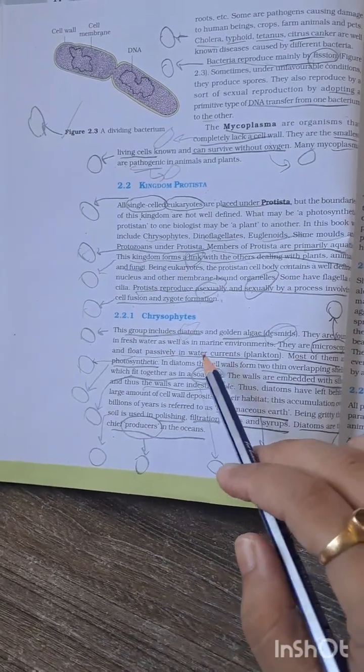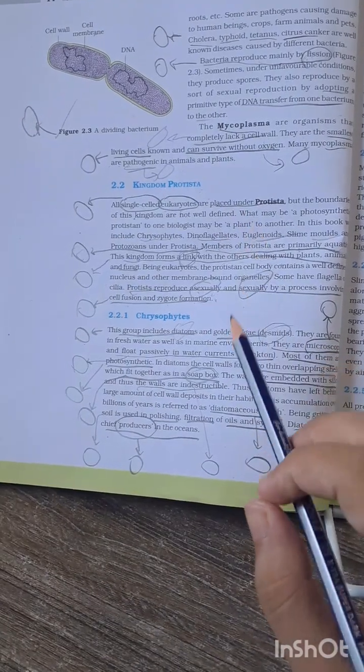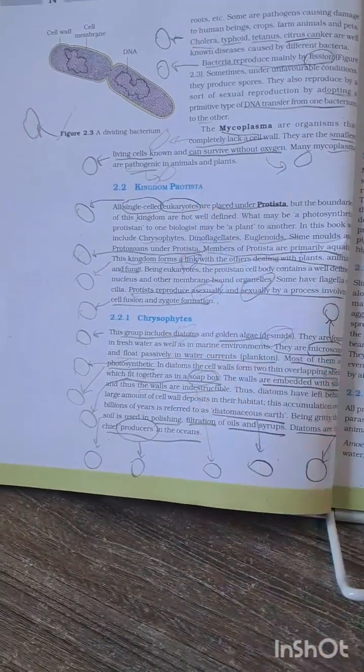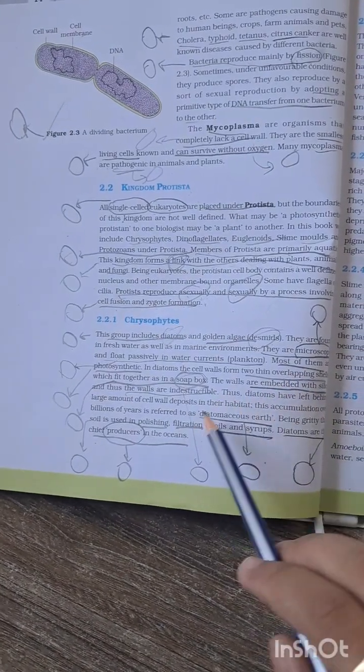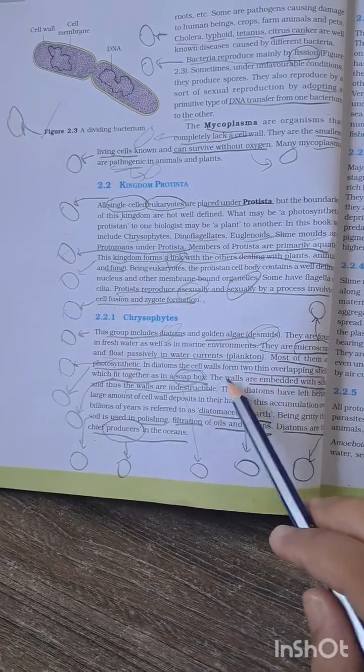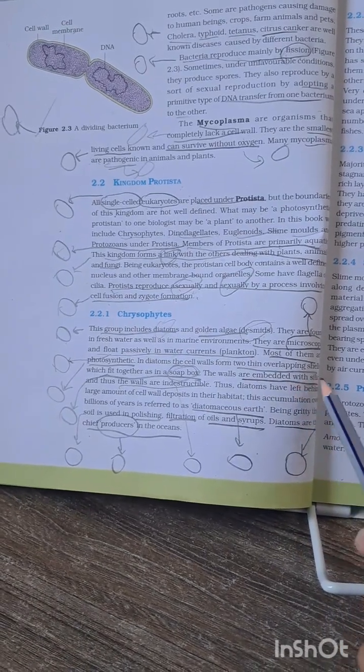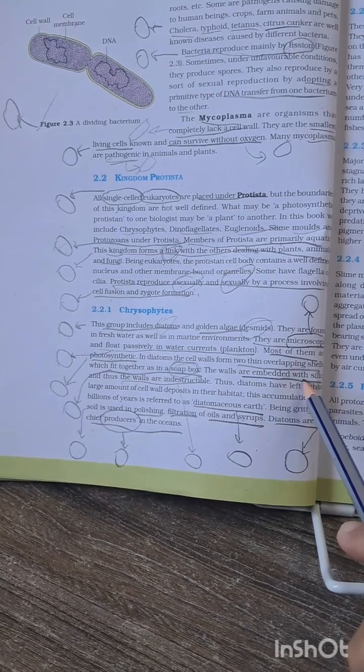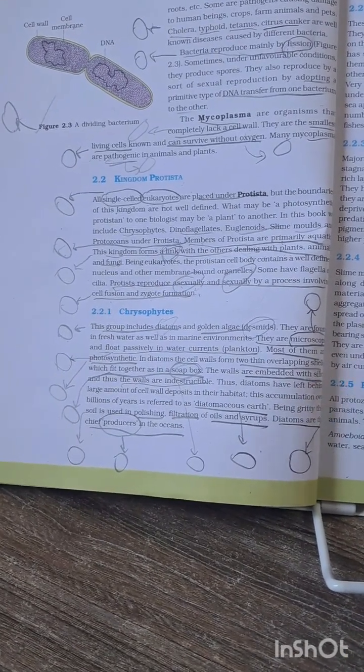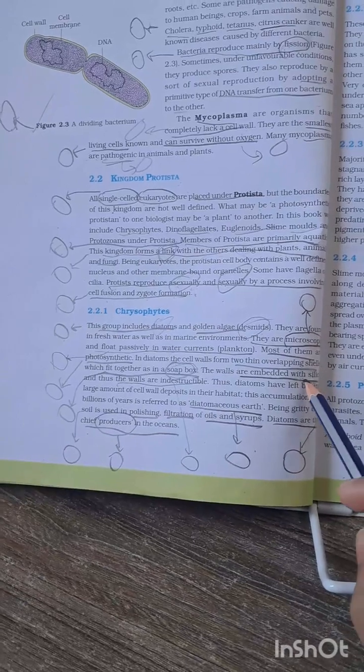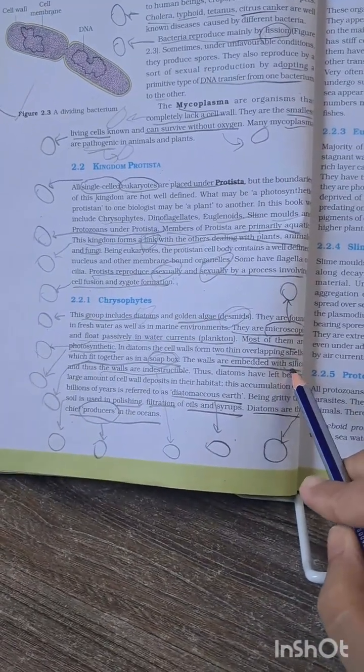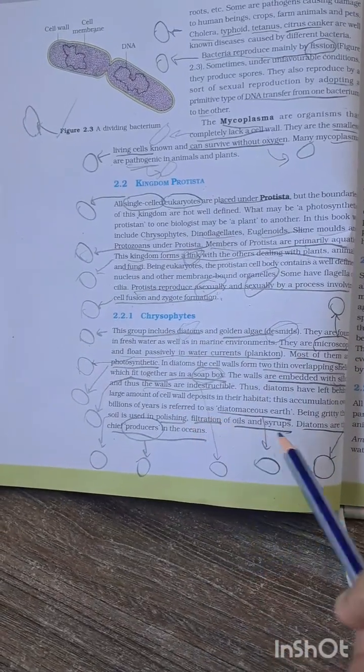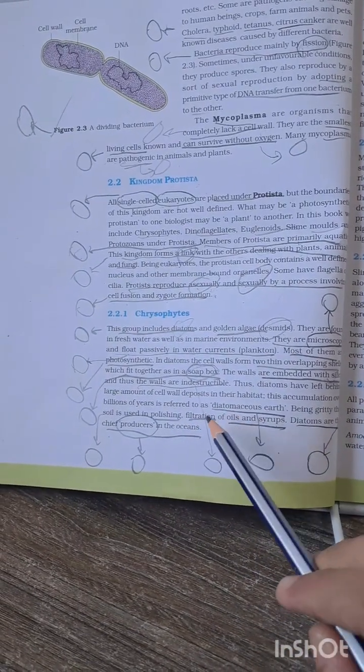Most important, the other probable MCQ - this soap box appearance, the walls are embedded in silica, and this has been asked many times. They will give other elements like silica, phosphorus, etc. You have to choose the silica option. Cell walls are indestructible.